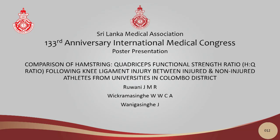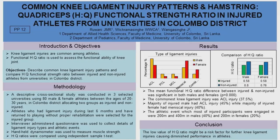Poster Presentation Number 12 is 'Comparison of Hamstring to Quadriceps Functional Strength Ratio (HQ Ratio) Following Knee Ligament Injury Between Injured and Non-Injured Athletes from Universities in Colombo District' by Ruvani JMR, Vikramasinghe WVCA, and Vanikasinghe J. The paper is presented by Ruvani JMR. Good morning. I want to thank SLMA for giving me this opportunity. I am JMR Ruvani, a physiotherapy undergraduate student from the University of Colombo. Today my topic is common knee ligament injury patterns and hamstring to quadriceps strength ratio in injured athletes from universities in Colombo District.